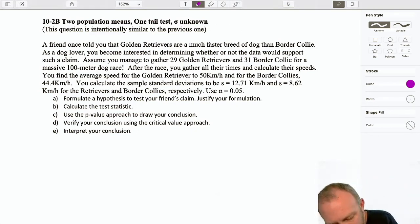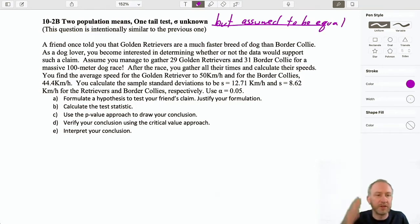Again, I should make a little edit here. This says again, sigma is unknown, but assumed to be equal. So we'll keep that same assumption that we're carrying over from 10-2-A.